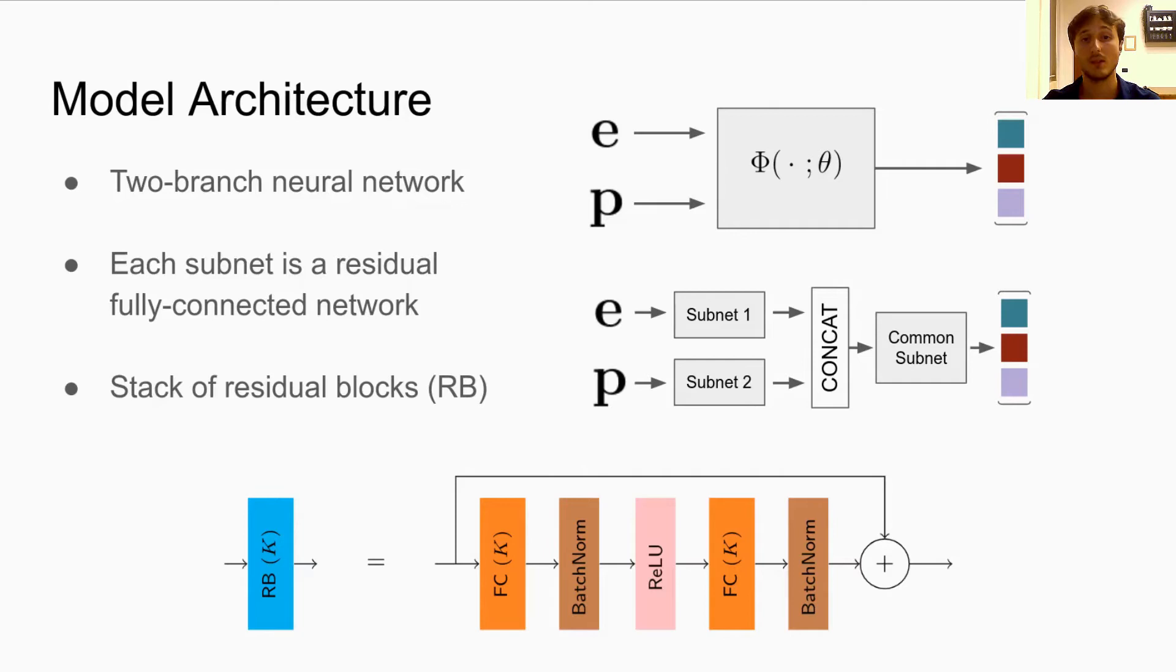As the architecture for this model, we choose to dedicate a separate subnetwork for each input, then concatenate the outputs and give them to a final common subnetwork that produces the final embeddings. Each subnetwork is implemented as a stack of residual blocks, where each block is composed by two fully connected layers, batch normalization and rectifier linear unit activation, that are combined as shown here in this figure.